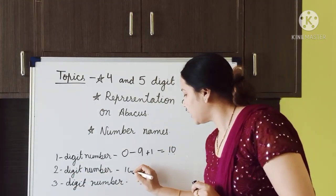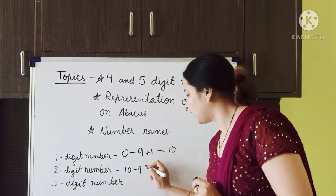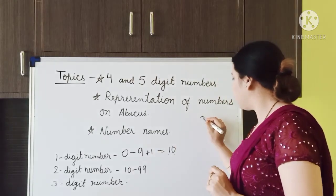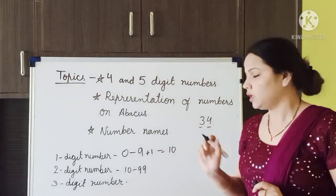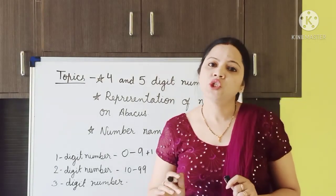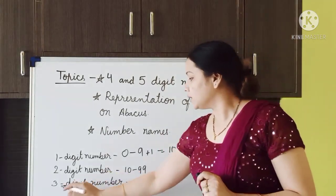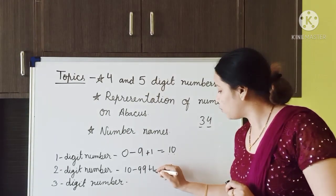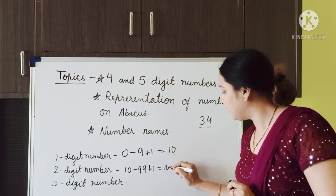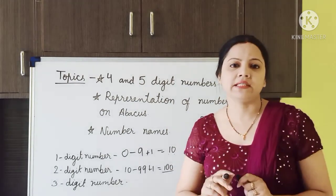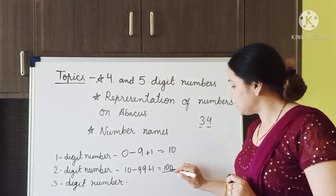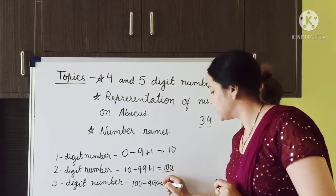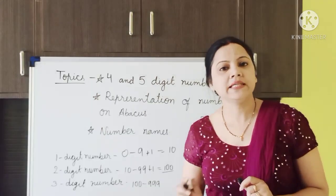So 2 digit numbers go from 10 to 99. For example, take the number 34 — it has 2 digits, so it is called a 2 digit number. Now for 3 digit numbers: 99 is the largest 2 digit number. As soon as we add 1 to it, it becomes 100, which is a 3 digit number and the smallest 3 digit number. And 999 is the largest 3 digit number.